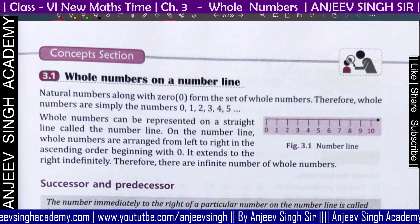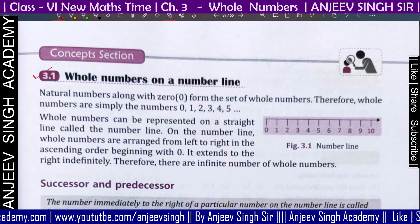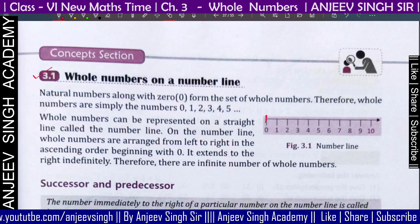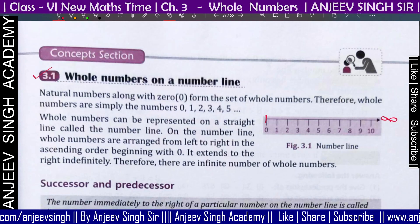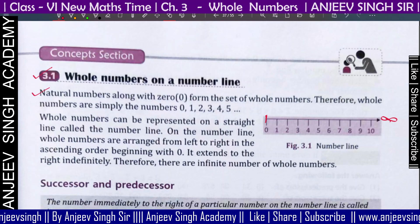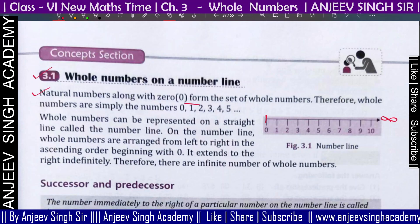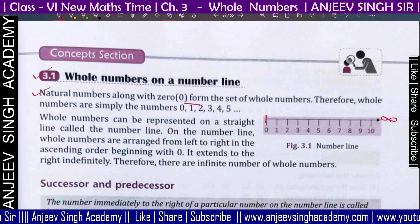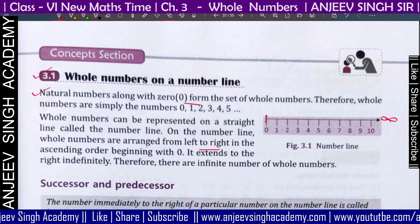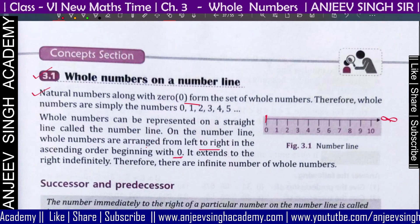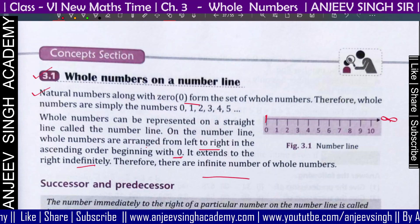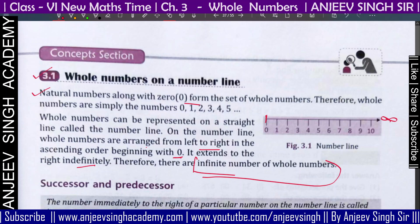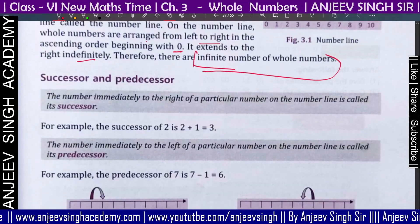Whole numbers — how to refer to them: whole numbers start from 0 and go to infinite. Zero is the smallest whole number. On the number line, whole numbers are arranged from left to right, beginning at zero and extending to the infinite. So if anyone asks how many whole numbers there are, you can say there are infinite whole numbers.